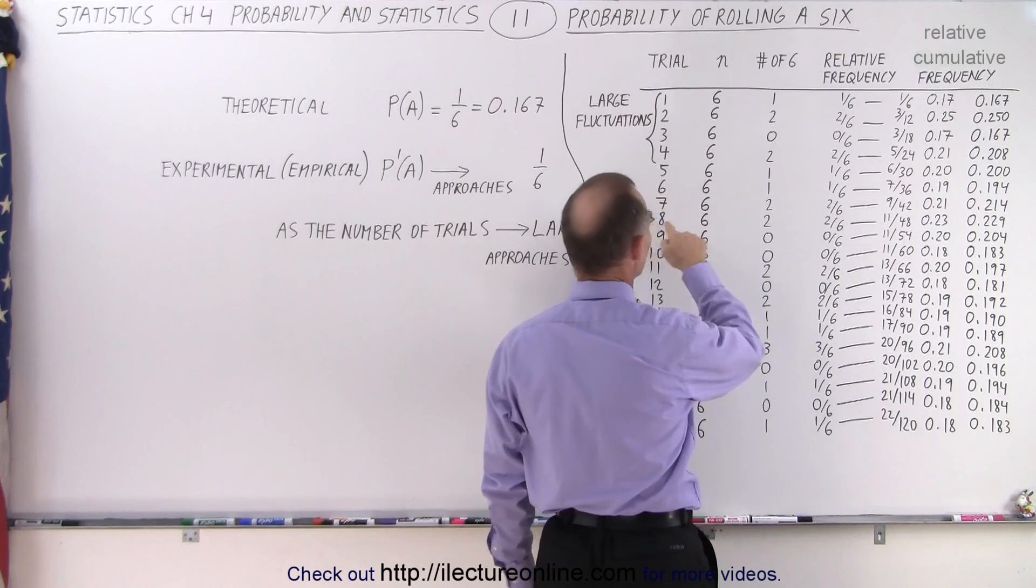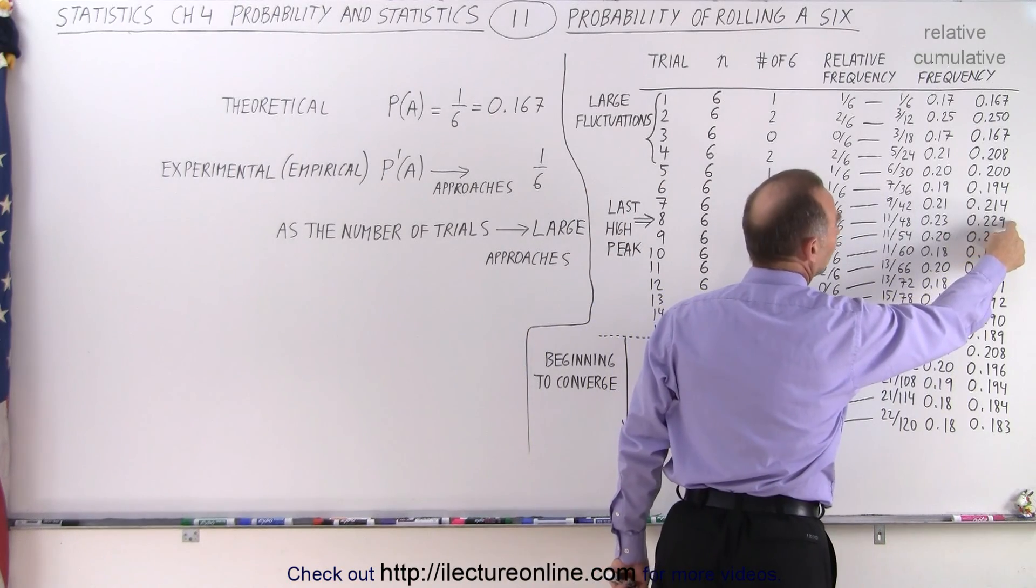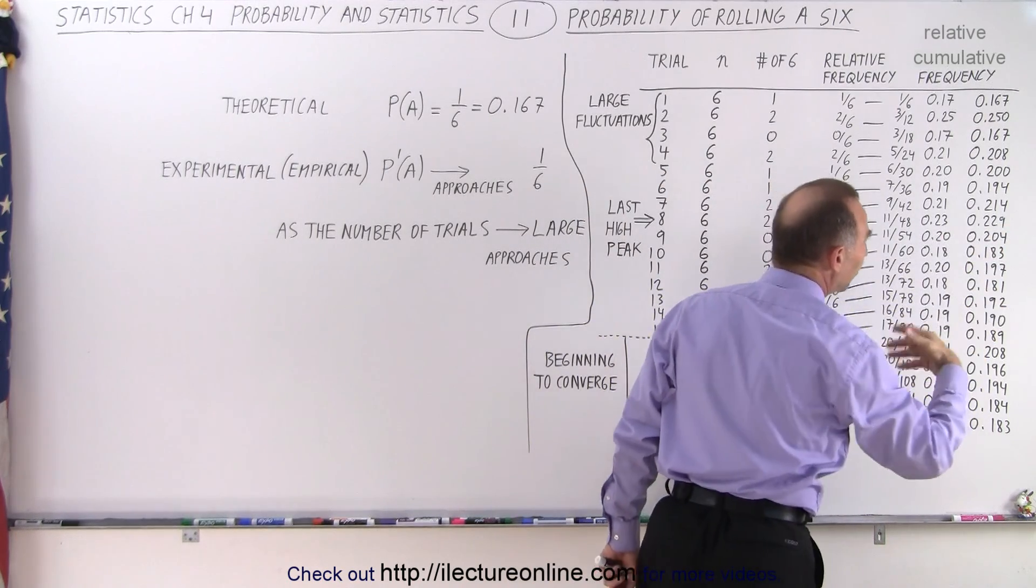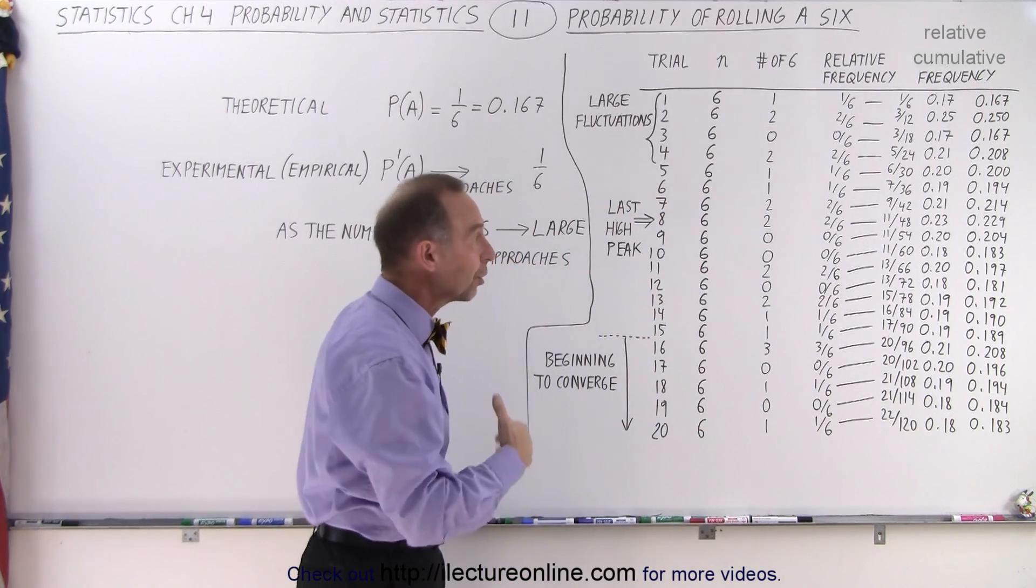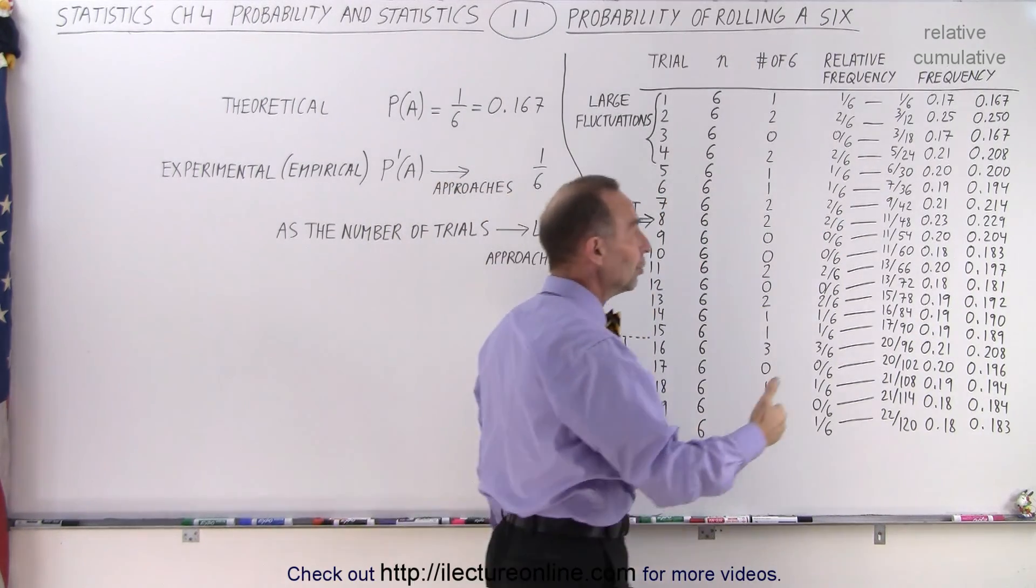So notice that after eight trials here, we end up with an experimental probability of 0.229, which is much greater than the theoretical probability.